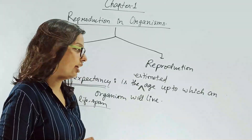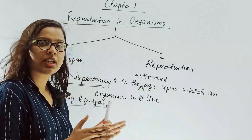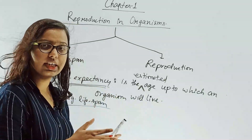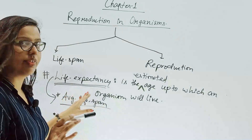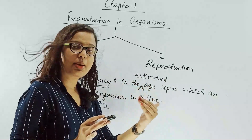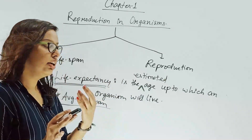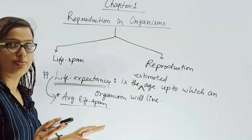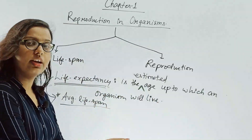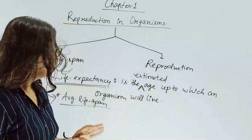If you know the average life span of Indians, which is 64 to 65 years, then you can tell the life expectancy of a newborn born today. You can say that this particular baby is going to live at least 64 to 65 years. You know this because of the average life span — the average life span of Indians is 64 to 65 years, so you can say this baby will live at least up to that average. This is life expectancy.